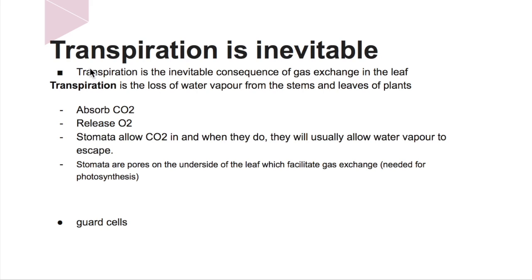Our first assessment statement is that transpiration is the inevitable consequence of gas exchange in the leaf. We know that leaves and plants absorb carbon dioxide for photosynthesis and they release oxygen. When this happens in the plants, carbon dioxide is absorbed in through the stomata, which are pores on the underside of the leaf which facilitates gas exchange.